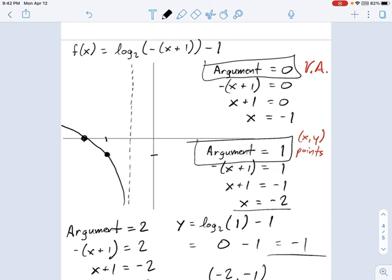And this is often easier than graphing by transformations, because you can handle any number of transformations by this method, and it will always just be these three steps. You find the vertical asymptote, then you find one of the x, y points, and then you find another x, y point, and connect the dots.